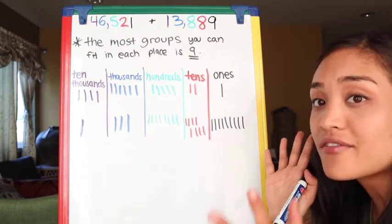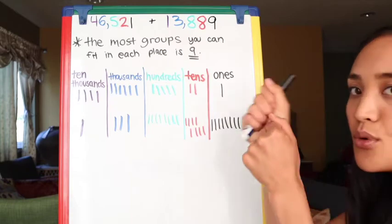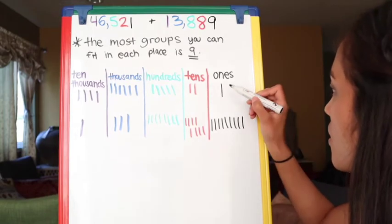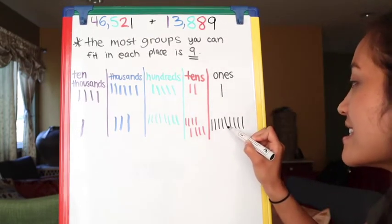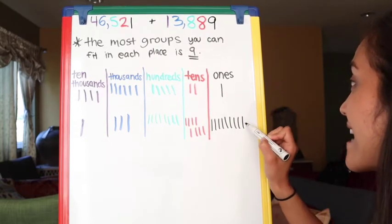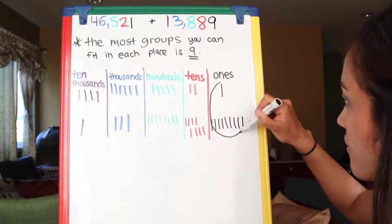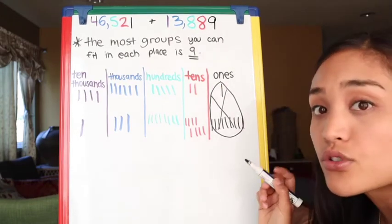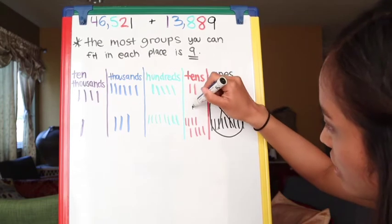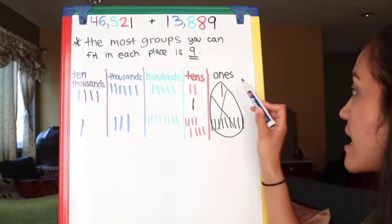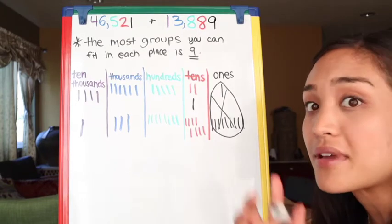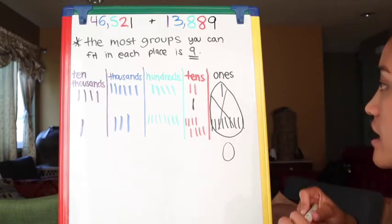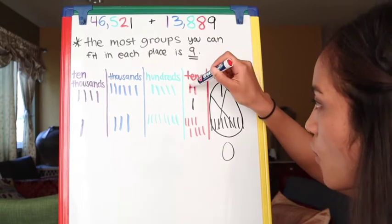Awesome, we have all our groups on the chart. We can now add them up. Once we hit a group of ten, I'm going to circle them and move them on over to one group in the next place value. Here we go — one, two, three, four, five, six, seven, eight, nine, ten! So all of this is a group of ten — ten ones equals one group of ten. I'm going to switch this on over, and it looks like I used all of my ones, so I'm going to put a zero.